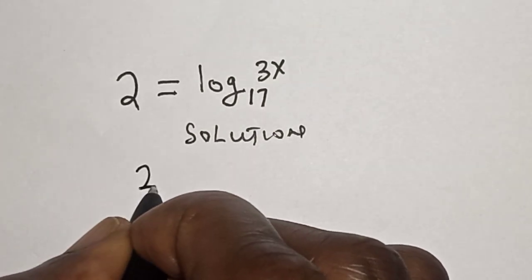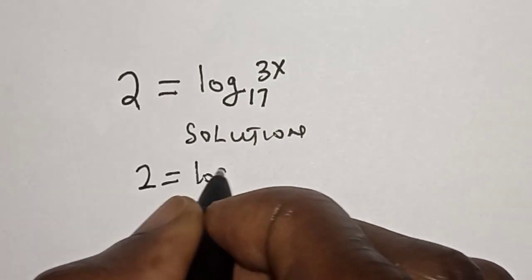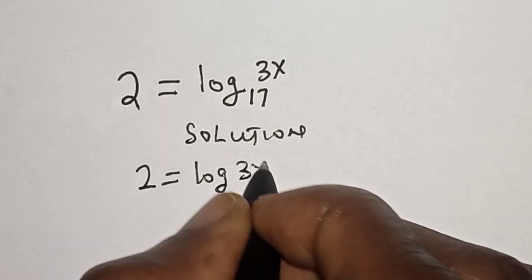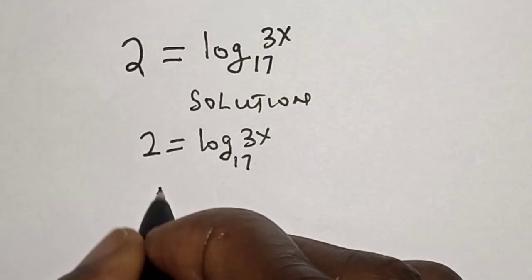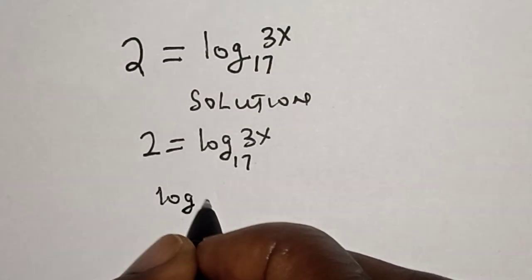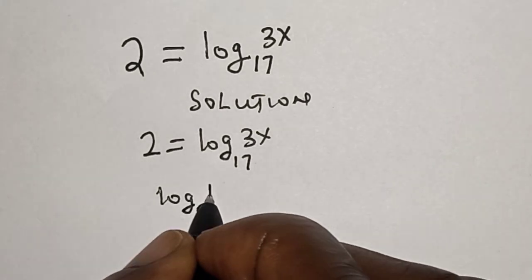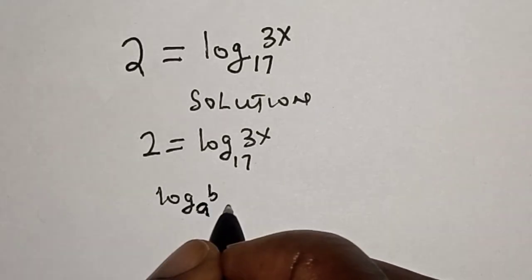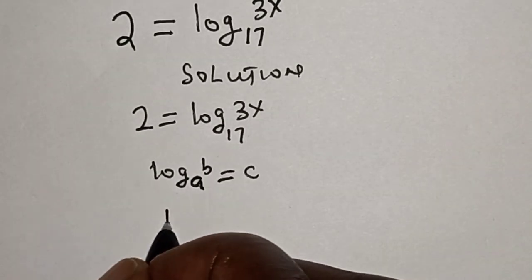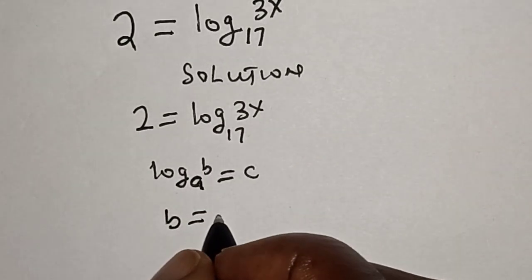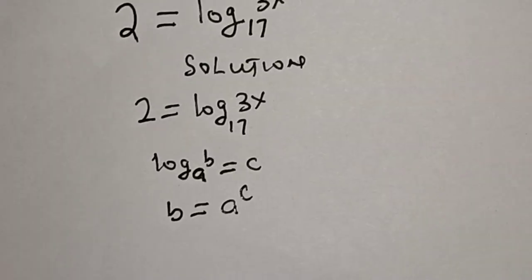We have 2 equals log base 17 of 3x. Remember this rule: if you have log b base a equals c, this is the same thing as b equals a raised to power c.